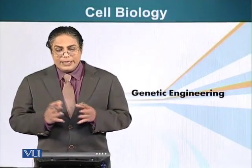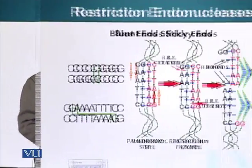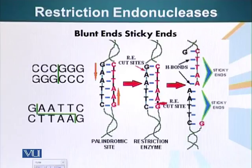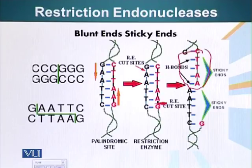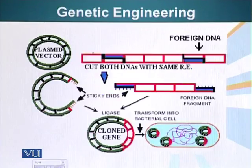You must have heard the term genetic engineering and wondered what it means. We have talked about endonucleases cutting DNA at specific sites. We have said that these sites are generally palindromic, and that some of these enzymes can generate sticky ends — meaning they leave certain nucleotides exposed, single-stranded DNA with the ability to form complementary hydrogen bonds with a similar sequence. So what can we do with this? Here is the genetic engineering.